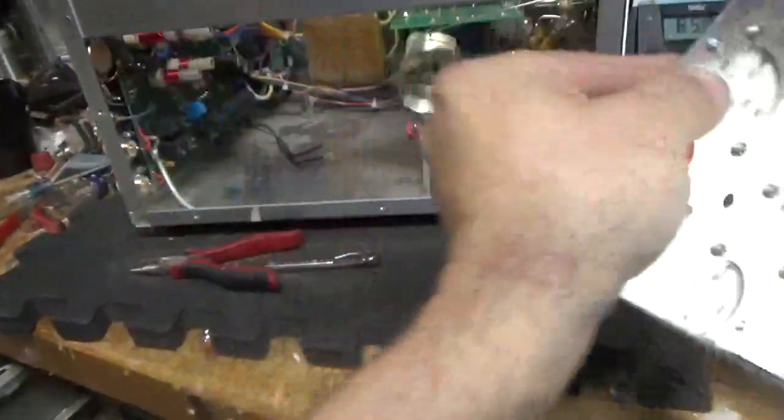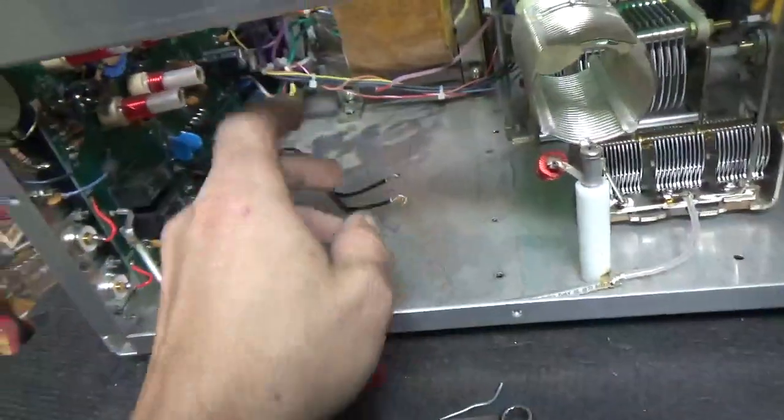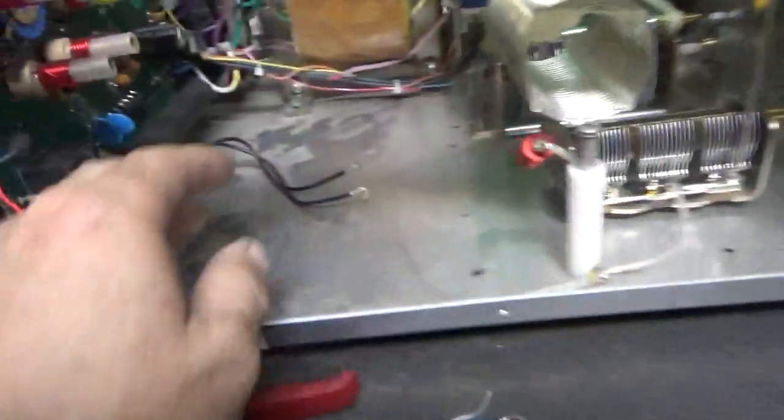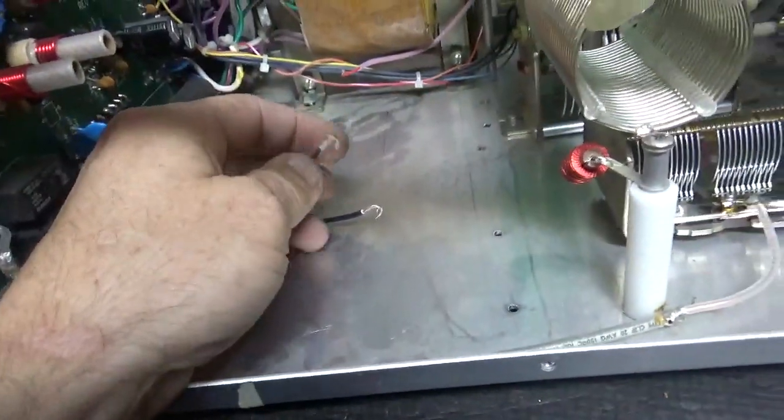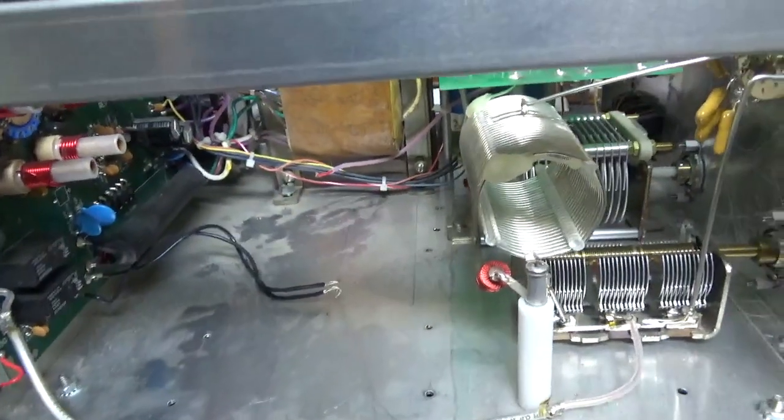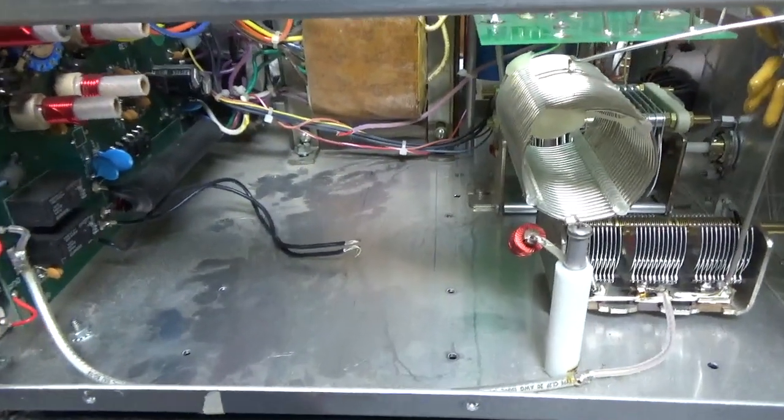I'm going to go ahead and reinstall that. I always unsolder the wires from below here, and then I re-strip them, and I will crimp and solder them. Okay, so I will be back, see you soon.